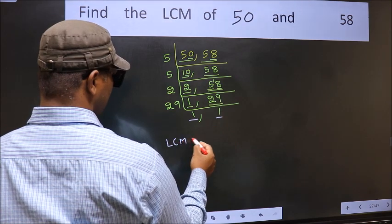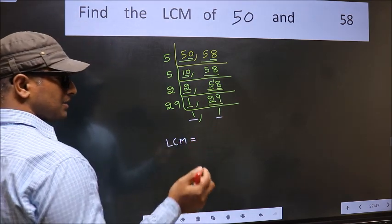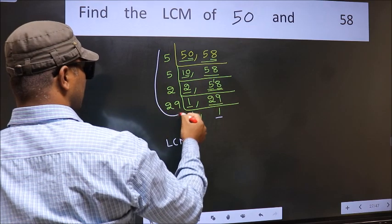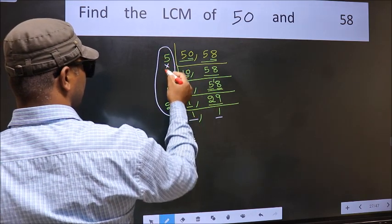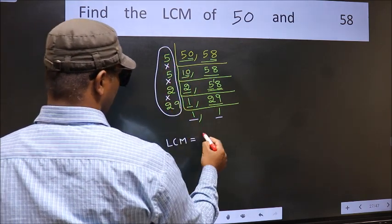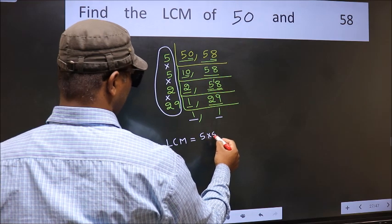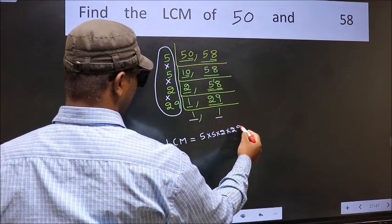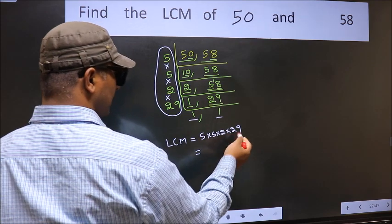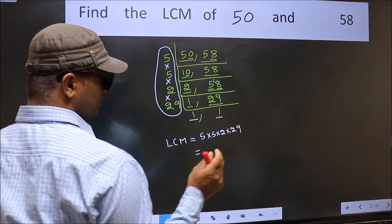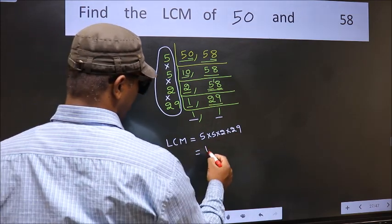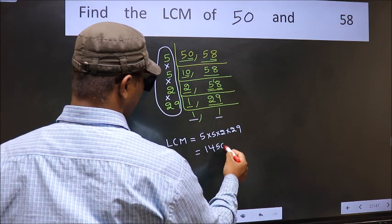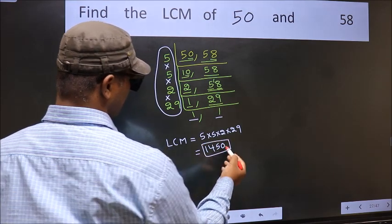So our LCM is the product of these numbers. That is 5 times 5 times 5 times 2 times 29. When we multiply these numbers we get 1450 is our LCM.